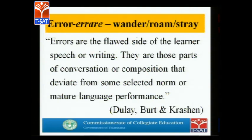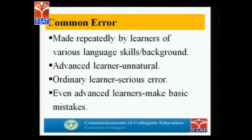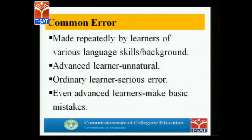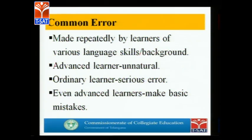Before we go into the discussion, let's have an overview of what we are going to discuss. Common error is something we make repeatedly, in spite of our corrections. When we differentiate our learners, we can find two types: an advanced learner and an ordinary learner. For an advanced learner, these errors are simple and unnatural. But for a serious learner, they pose problems, and for an ordinary learner, it is a serious issue.